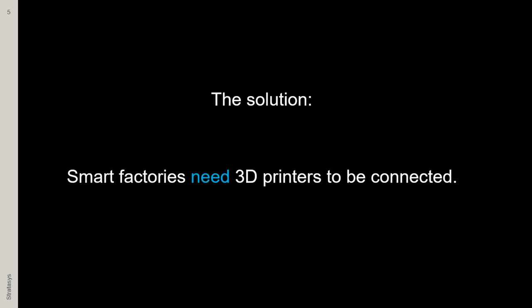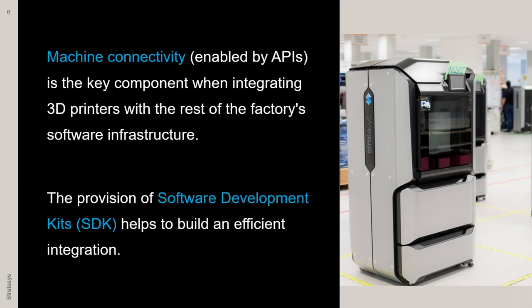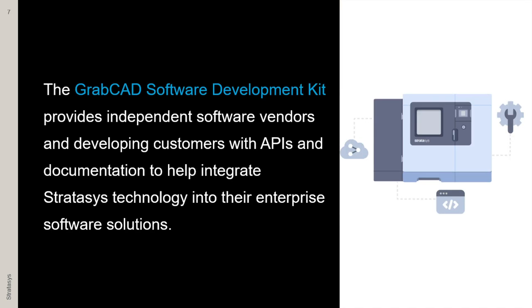Smart factories need 3D printers to be connected. Machine connectivity is the key component when integrating 3D printers with the rest of the factory's software infrastructure. The GrabCAD SDK provides independent software vendors and developing customers with APIs and documentation to help integrate Stratasys technology into their enterprise software solutions.